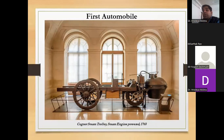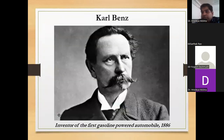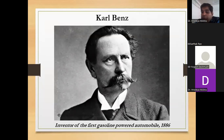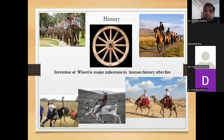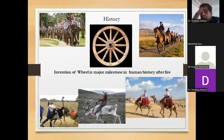This is the first vehicle — the first automobile in history. Cugnot is the founder of this vehicle. The inventor of the first gasoline-powered automobile came in 1886. The invention of the wheel is a major milestone in human history after fire. Because of the wheel, we can see the ease in our transportation system.